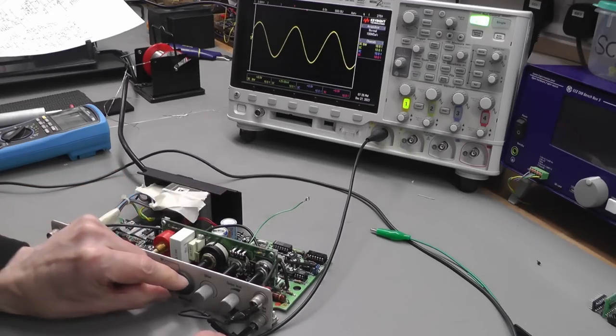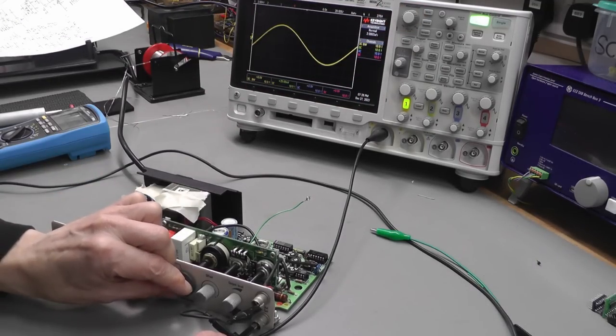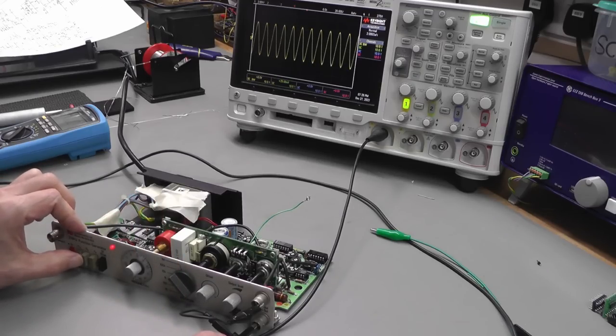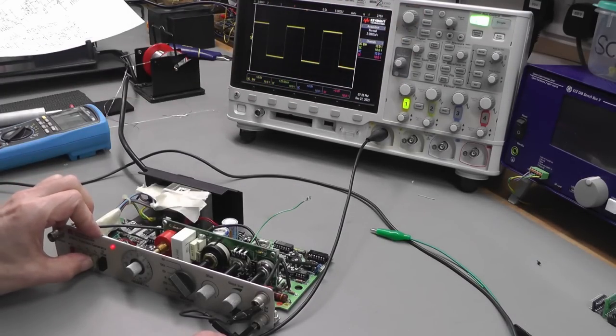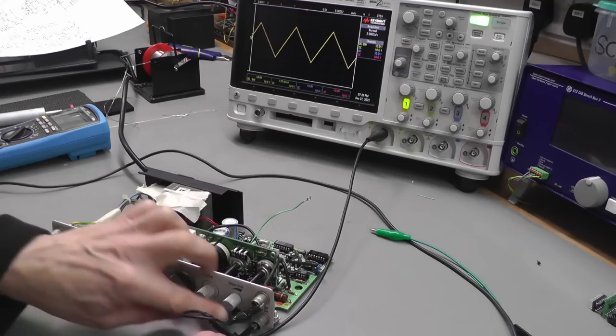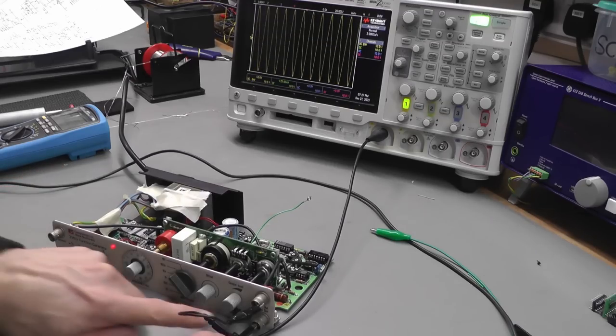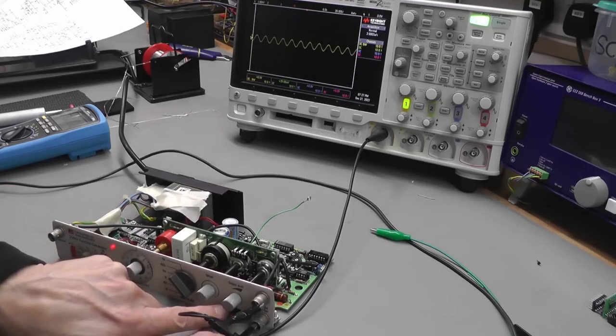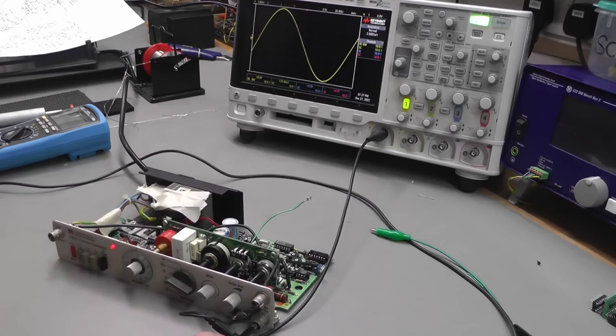And the frequency adjust—that pot's nice and clean. And how about the multiplier? Yes, that's working good. Let's try square wave. Yeah. Triangular wave, yeah, that's working. And back to sine wave again. And the minus 20 dB switch, yeah, that's working as well.